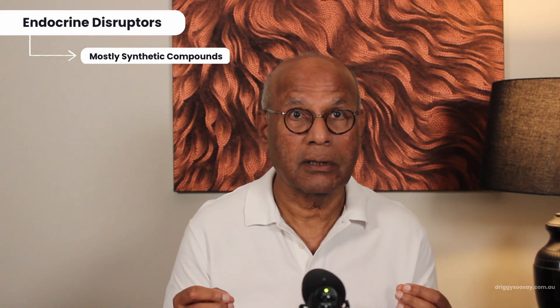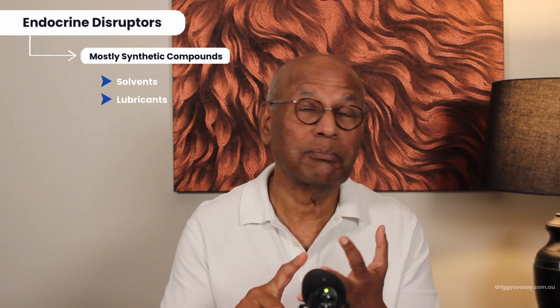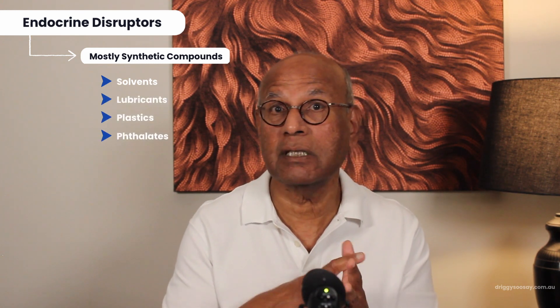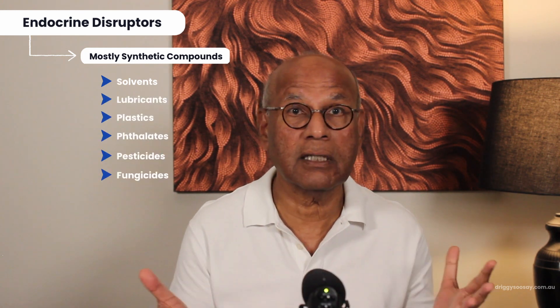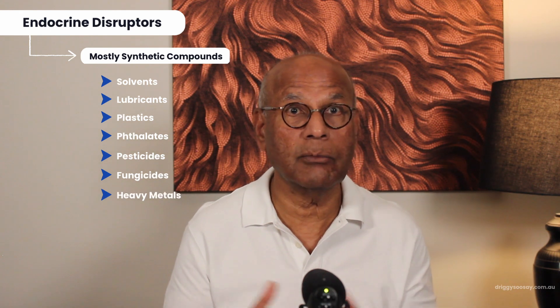Where do these endocrine disruptors come from? Endocrine disruptors are synthetic compounds and include solvents, lubricants, plastics, phthalates, pesticides, fungicides, and heavy metals, to name a few. These chemicals enter us through the food chain or the atmosphere and can interfere with functions in the body that are controlled by hormones.